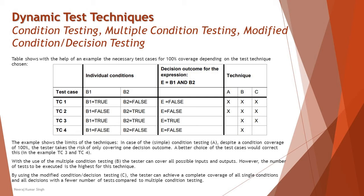Moving to multiple condition testing, technique B: the tester designs test cases with the objective of covering all combinations of values of the individual conditions, checking whether the output changes by varying the inputs. All possible combinations of B1 and B2 — TC1 through TC4 — are tested. This is referred to as multiple condition testing or multiple condition coverage.